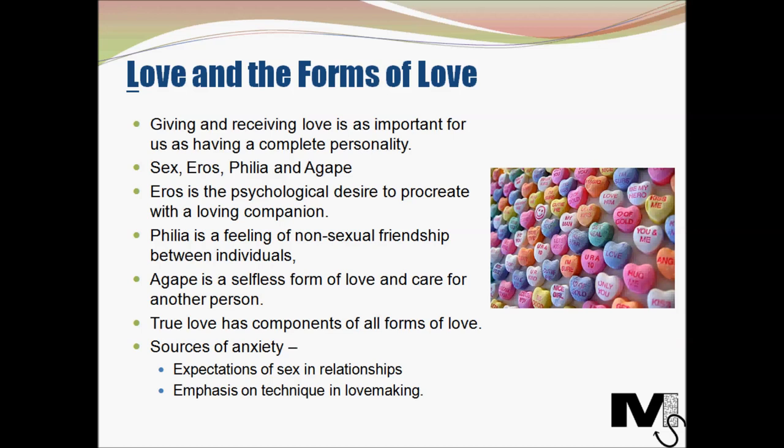Sex refers to a biological need to derive satisfaction out of sexual intercourse or by the release of sexual tension in some other way. Eros, on the other hand, is the psychological desire to procreate with a loving companion — eros is essentially making love, whereas sex refers to sex without love and care. Philia is a feeling of non-sexual friendship between individuals, be it friends, siblings or partners. Eros is actually built on the foundations of philia, and in the absence of philia there would be no relaxation or friendly companionship in a really passionate couple.